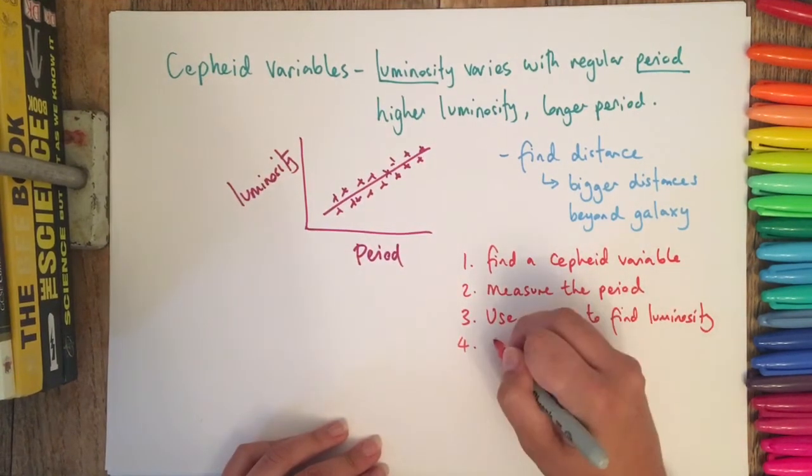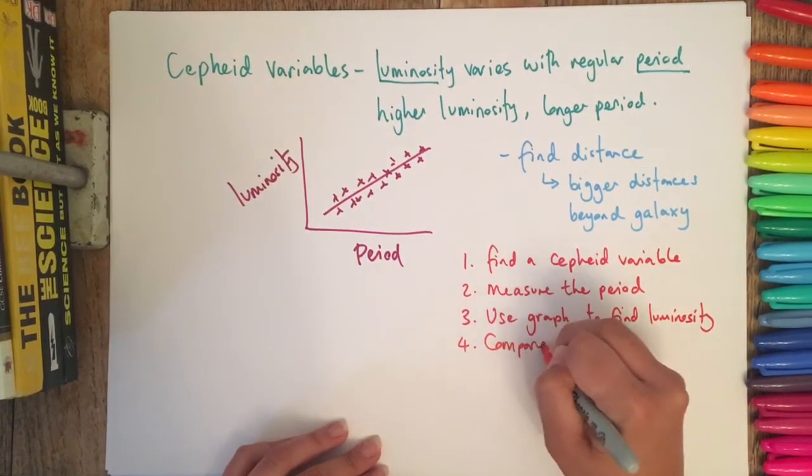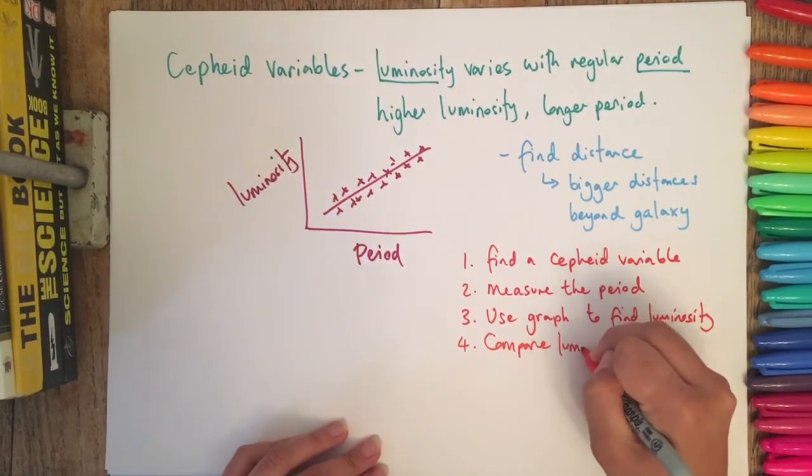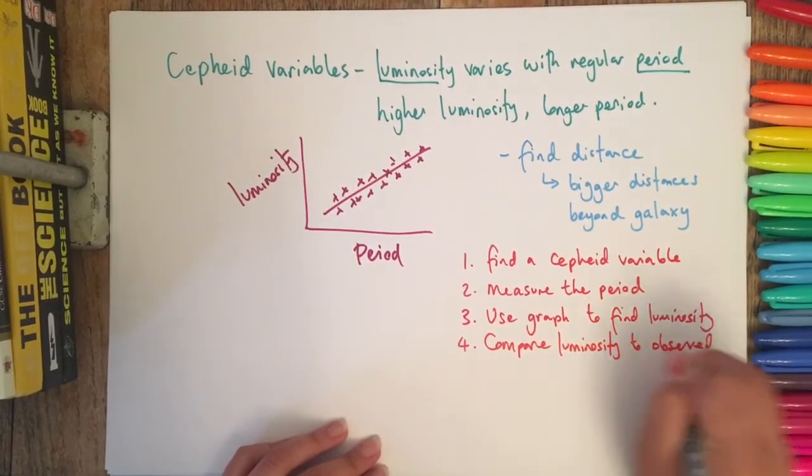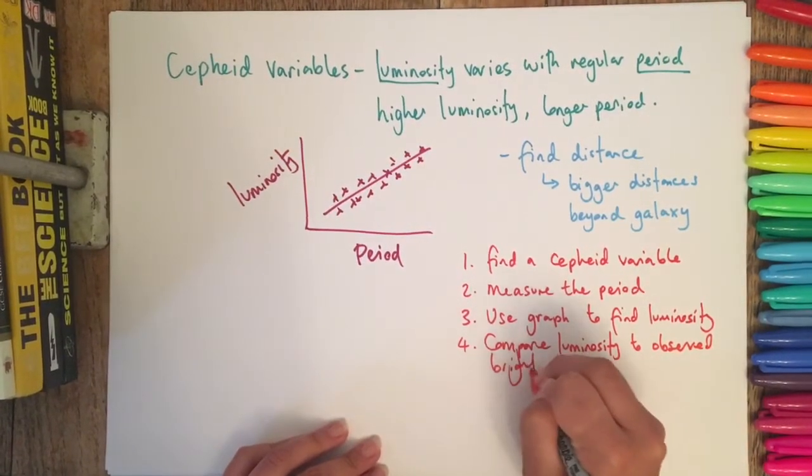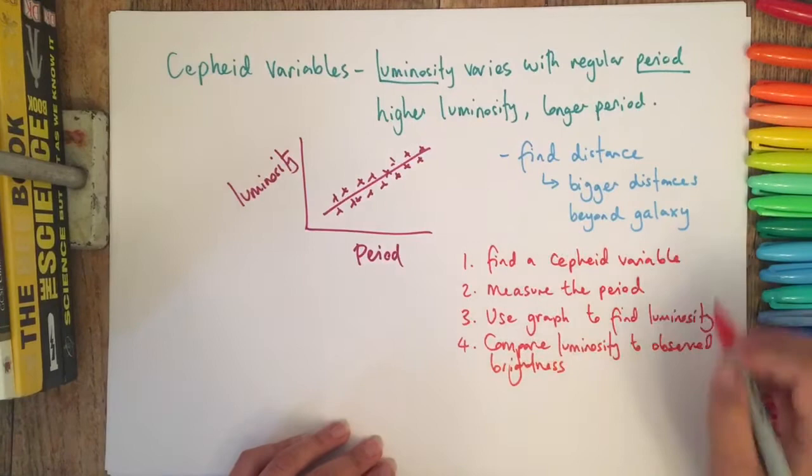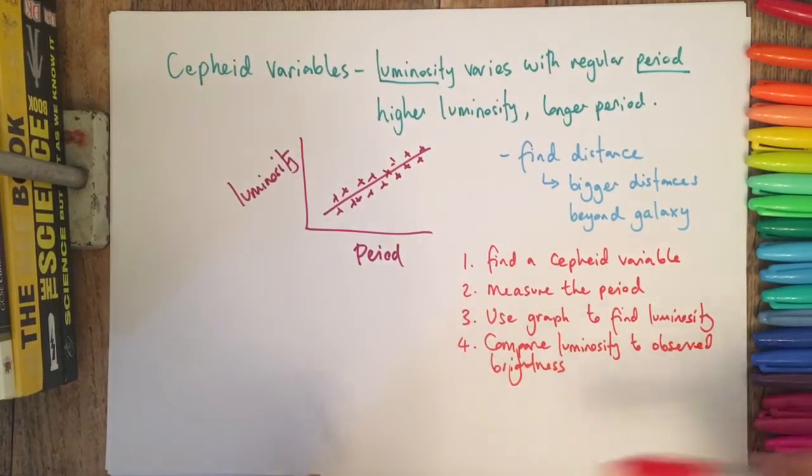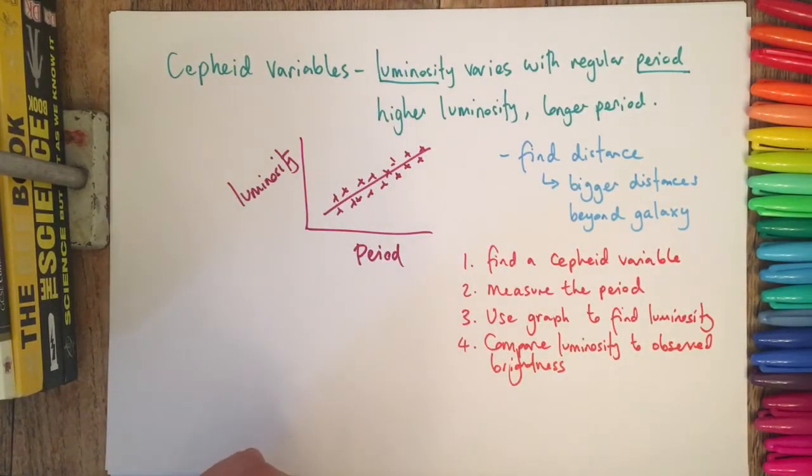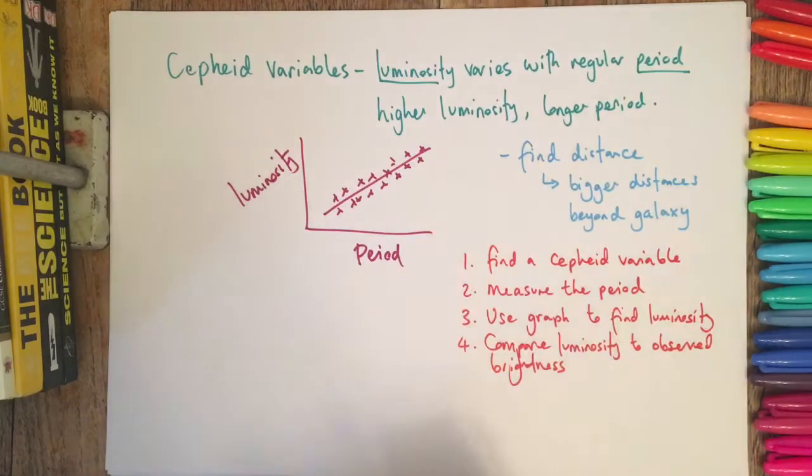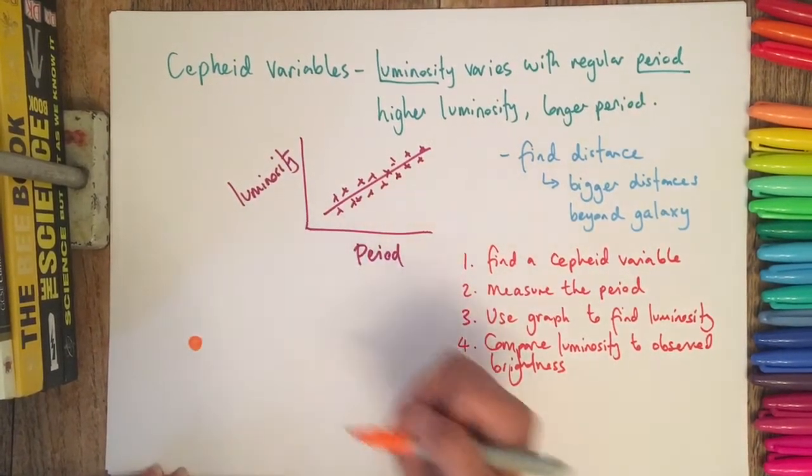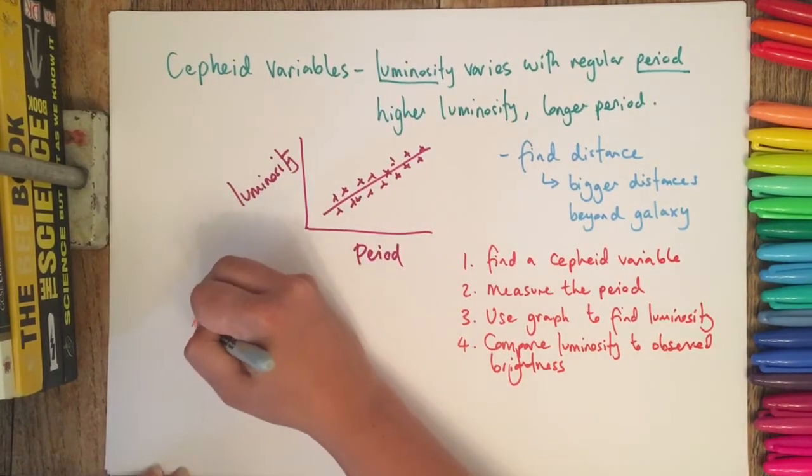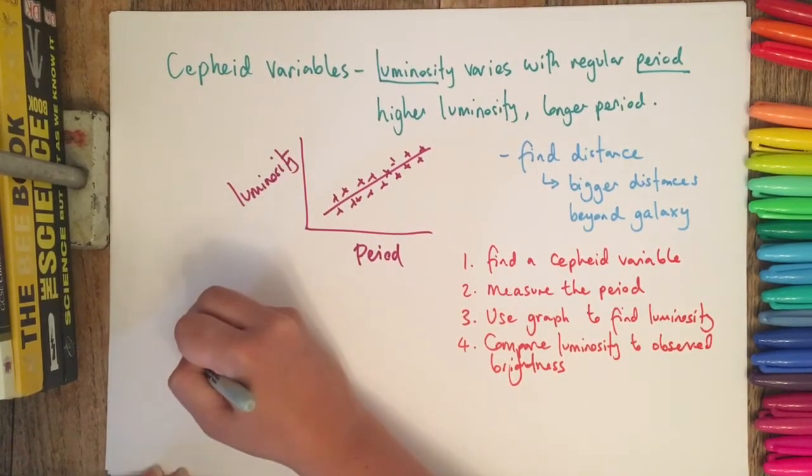After that, you are then going to compare the luminosity to the observed brightness, and that's essentially it. Let's talk about what we mean by observed brightness. Say you've got a star, and we know that a star is going to be emitting light in all directions.